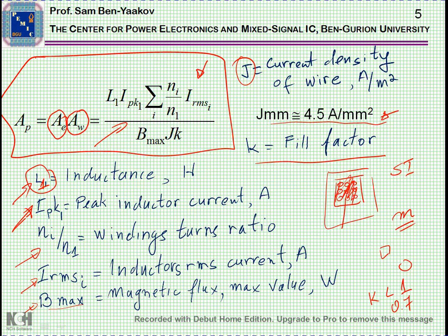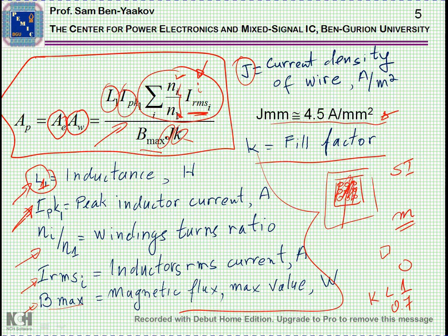So here is this equation. Let me just go over the right side of this equation. We have the inductance, peak current. This is the sum of the products of turns ratio between a given winding and the first one times the RMS of this particular i-th winding. And then we have Bmax, and then we have the J, which is the current density, and K, the fill factor. Once you have all these from the design of the electronic circuit, you decide on this, and on this, you estimate the fill factor. You go ahead and calculate AP.